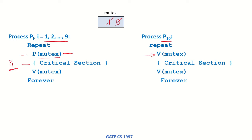p10 executes V(mutex), which is a signaling operation, so mutex becomes 1 and p10 enters the critical section. Now both p1 and p10 are in the critical section. With mutex now equal to 1, any of the processes p2 to p9 may also be able to enter. Let's say p2 wishes to enter, so p2 executes P(mutex), mutex becomes 0, and p2 also enters the critical section. Now p1, p2, and p10 are all in the critical section.